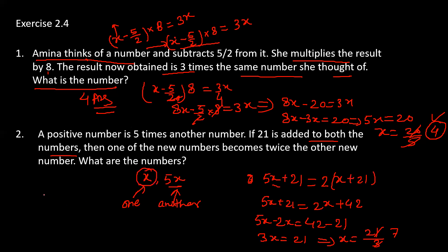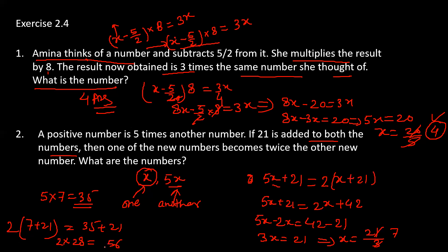So one number is 7 and another number is 5 into 7, means 35. If 21 is added: 7 plus 21 equals 28, and 35 plus 21 equals 56. And 2 into 28 equals 56, so LHS equals RHS.